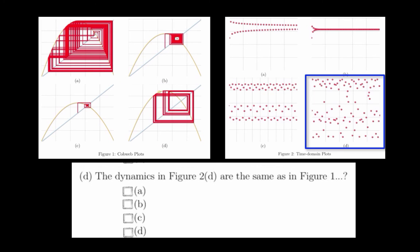Finally, the dynamics in Figure 2D are chaotic. Notice in contrast to Figure 2C, they are a little bit less regular than a periodic orbit. These dynamics correspond to Figure 1A.